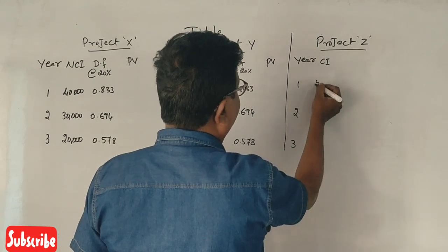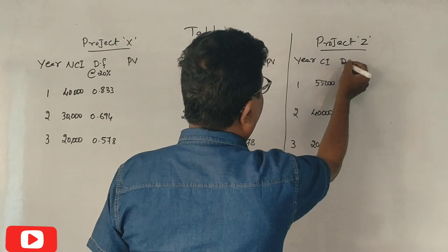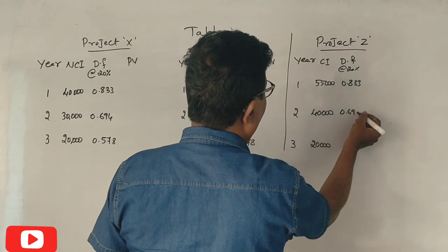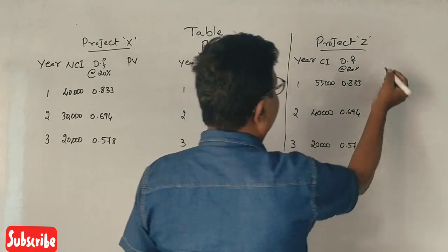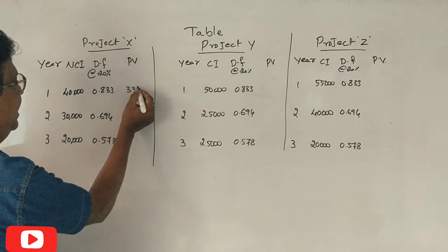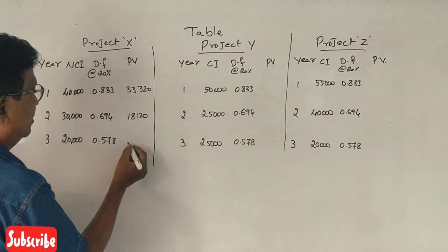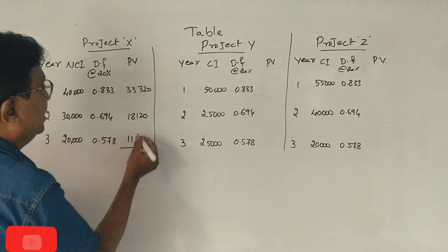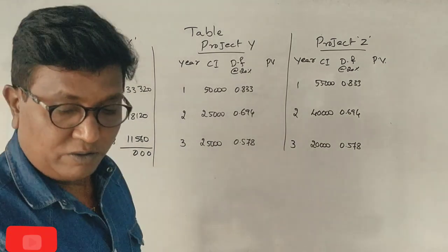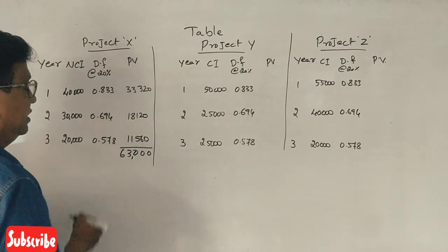Project Y cash inflows: year 1 — 55,000; year 2 — 40,000; year 3 — 20,000. Discount factors: 0.833, 0.694, 0.578. Present values for project X: 33,320; 18,120; 11,560. Total present value now calculated.